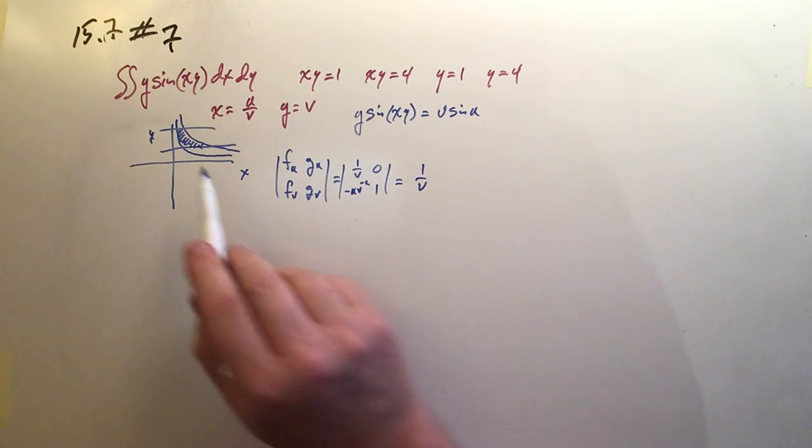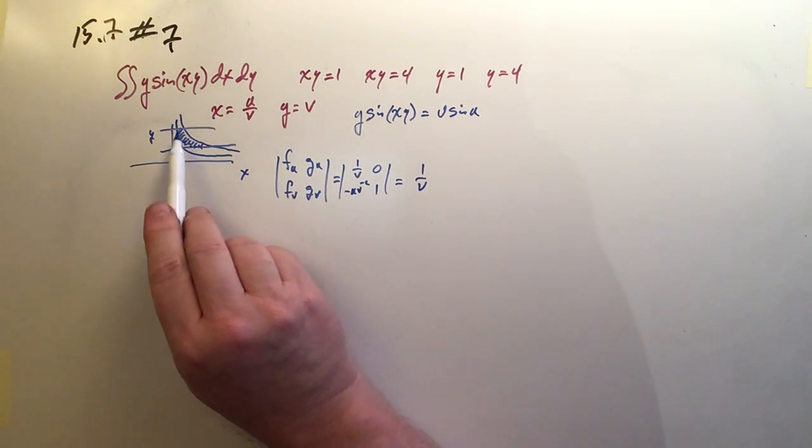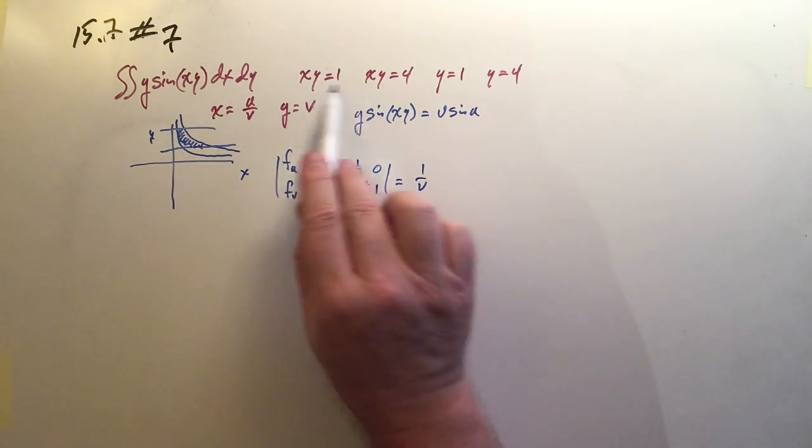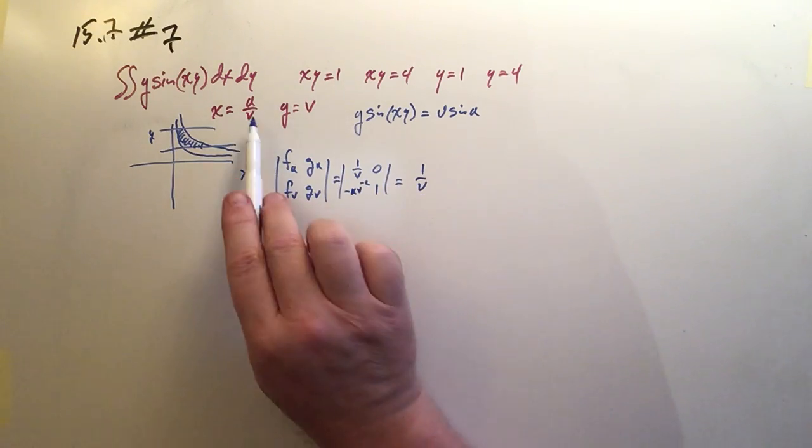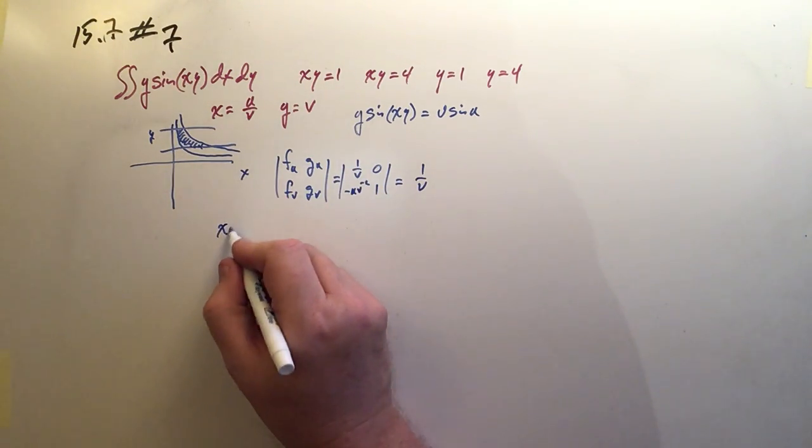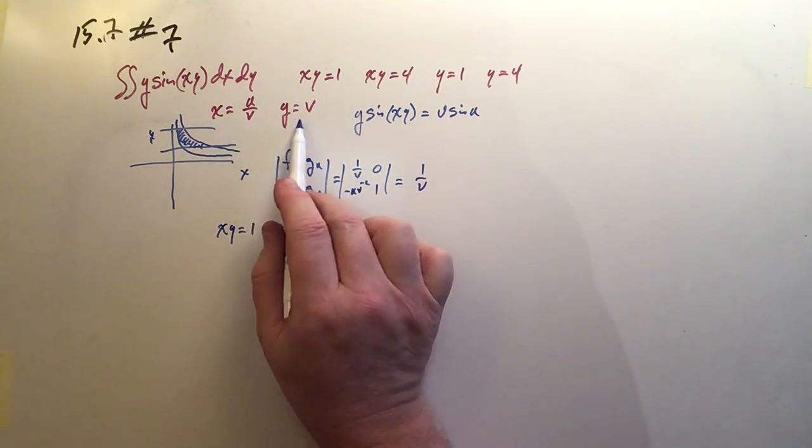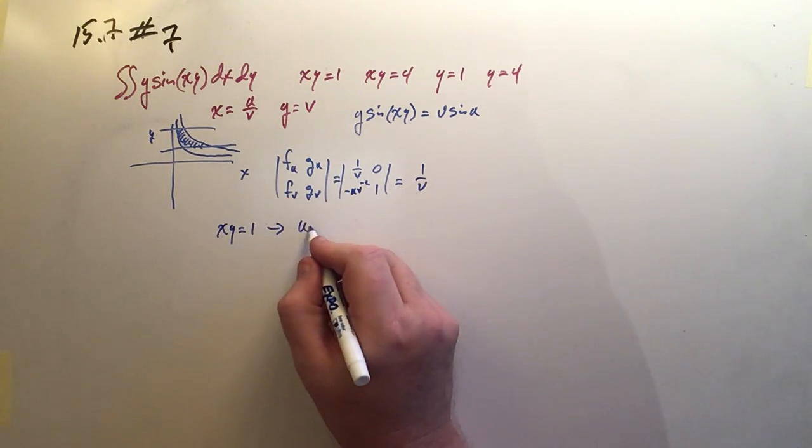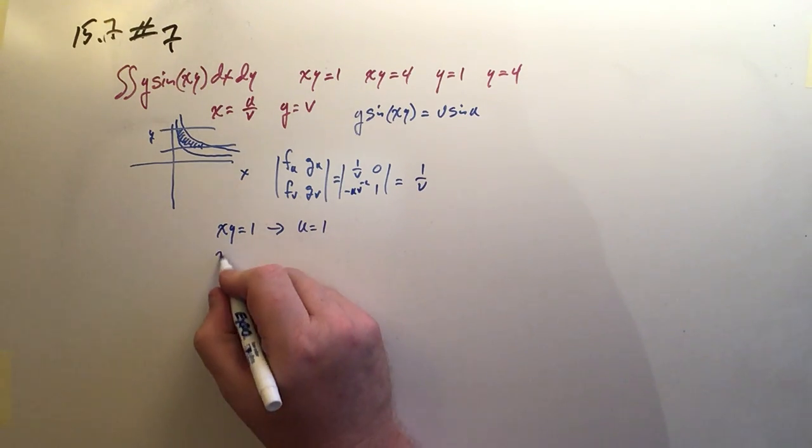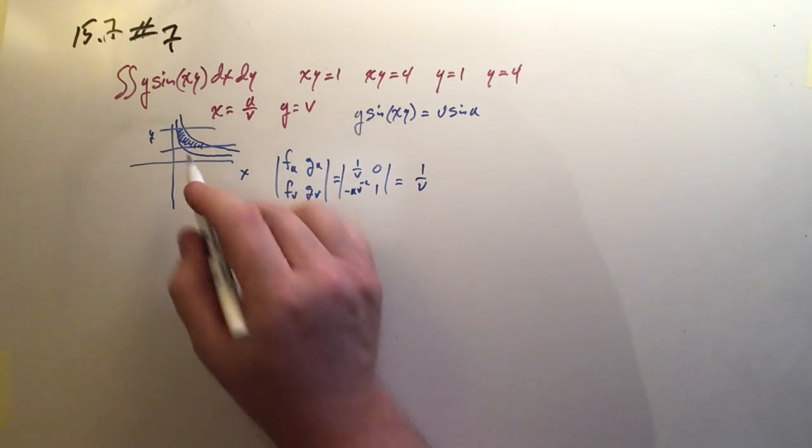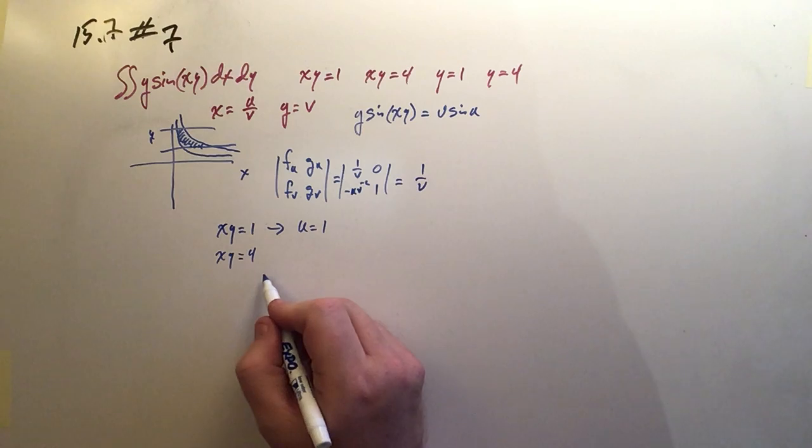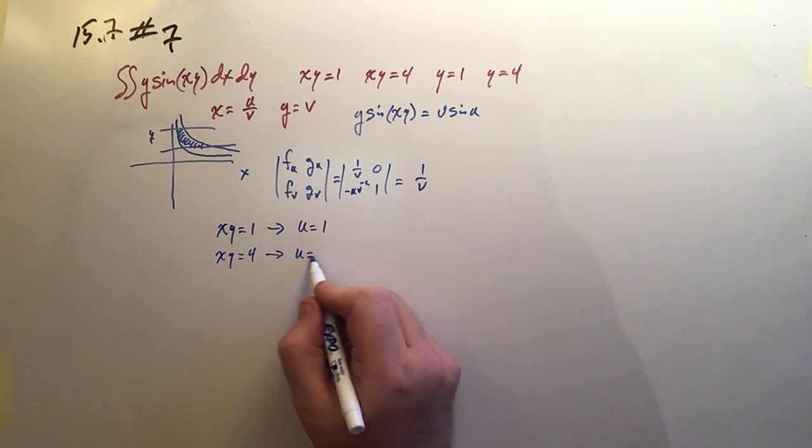It changed y sine xy into sine of u. That's worthwhile right there. Well, in this case, again, I'm not going to necessarily use these limits from the plane. Instead, I actually want to use these and see how they relate to our function. So when xy was equal to 1, well xy, the product of xy, is just u. So u equals 1. And when xy, the outer hyperbola, when that was 4, well that just means u is equal to 4.